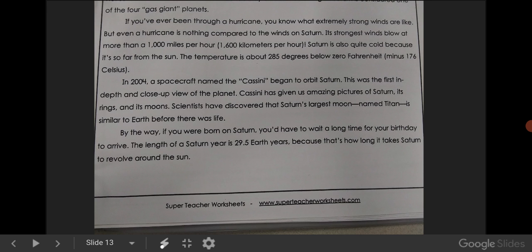If you've ever been through a hurricane, you know what extremely strong winds are like. But even a hurricane is nothing compared to the winds on Saturn. Its strongest winds blow at more than 1,000 miles per hour, or 1,600 kilometers per hour. Saturn is also quite cold because it's far from the Sun. The temperature is about 285 degrees below zero in Fahrenheit, or minus 176 Celsius.